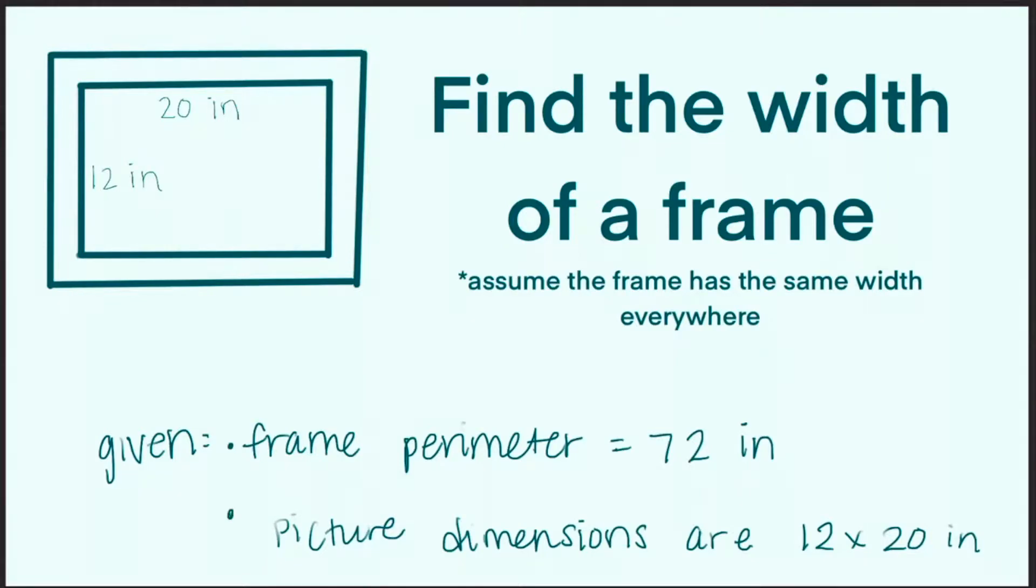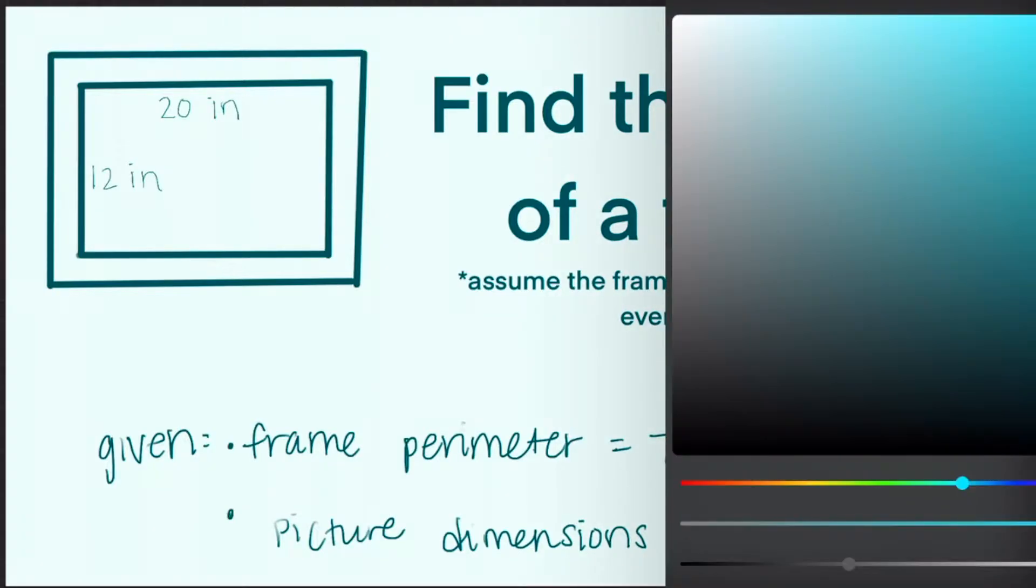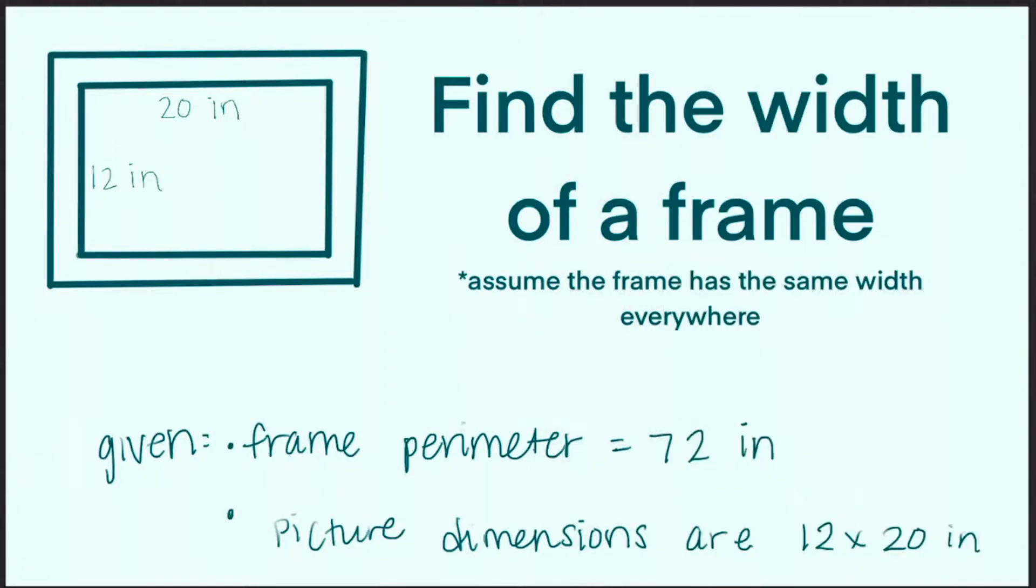Find the width of a frame. We're assuming the frame has the same width everywhere, and we're given that the frame perimeter is 72 inches, and the picture dimensions are 12 by 20 inches. So what we're going to be solving for is...